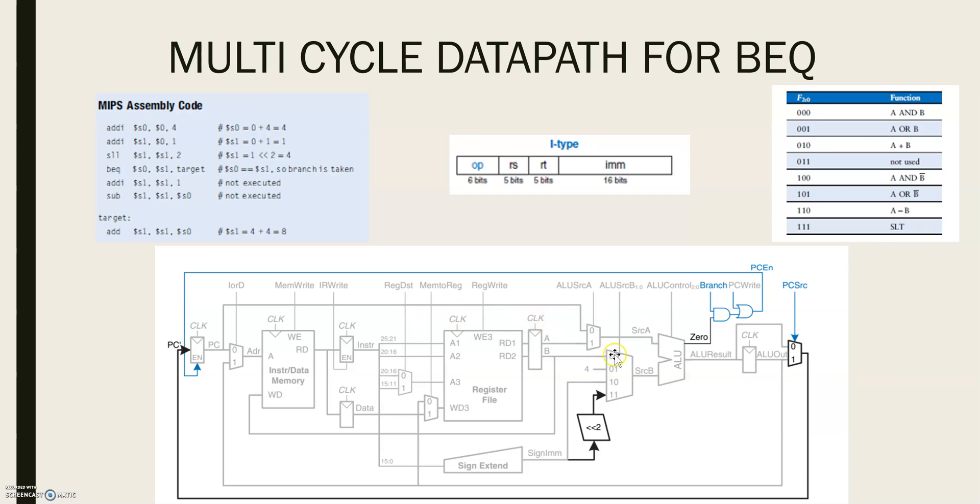On another step, ALU uses this updated PC value to compute that PC plus sign immediate multiplied by 4.